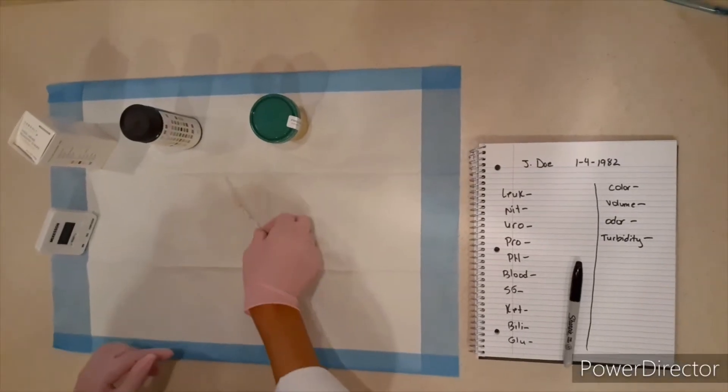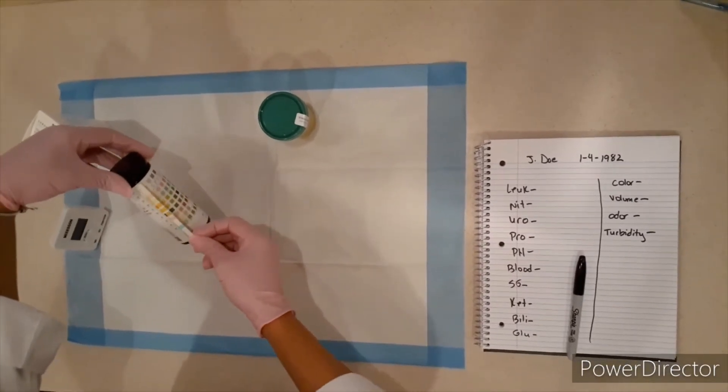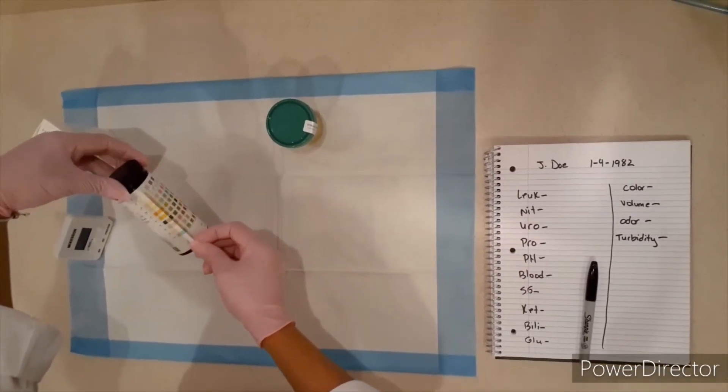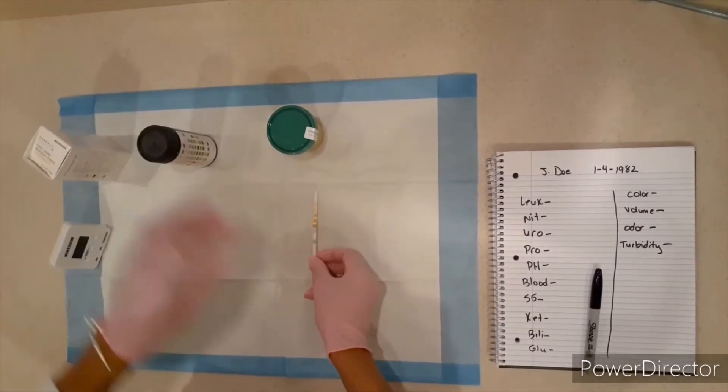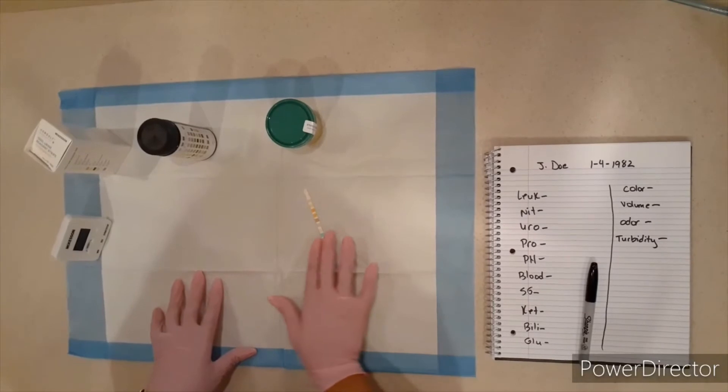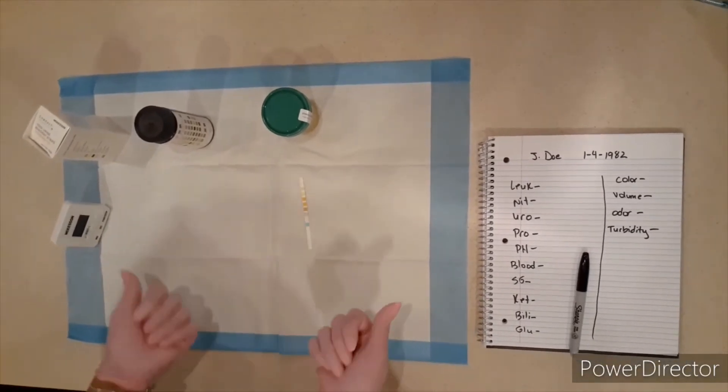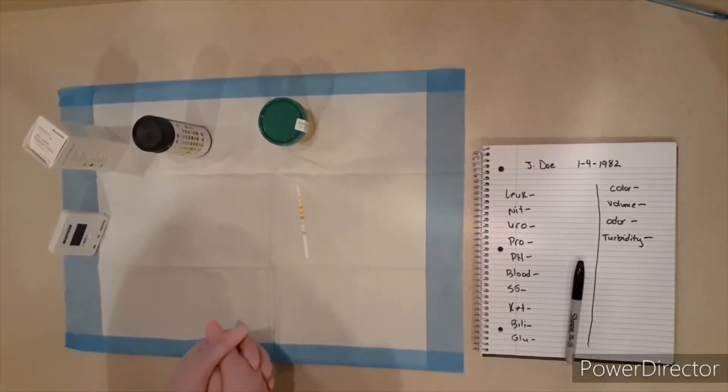All right. I've removed my reagent strip from the bottle. This is a strip that I will be going across and comparing the results of the urine to. And first thing I'm going to do before we dip the strip is do kind of a visual analysis of the urine.